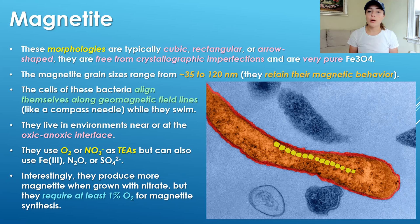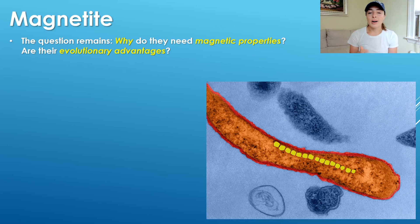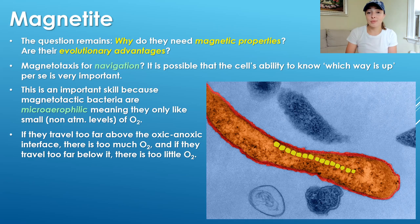They always seem to require at least 1% oxygen for magnetite synthesis — we'll talk about why in a couple slides. First, let's ask ourselves why these bacteria actually need magnetic properties. Are there evolutionary advantages? Why would they have evolved such a capability? Much of the research around this topic is speculation, but it's speculated that magnetite used for navigation is a possible reason these bacteria might have evolved this property.